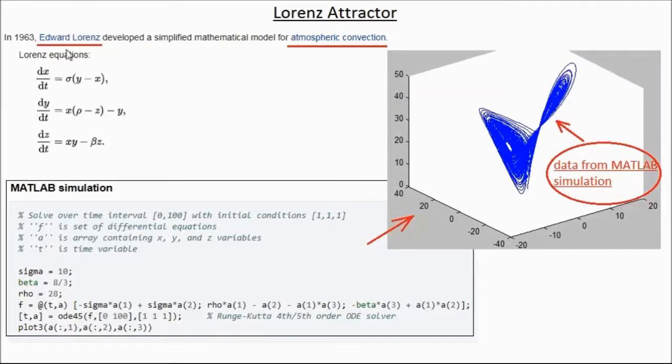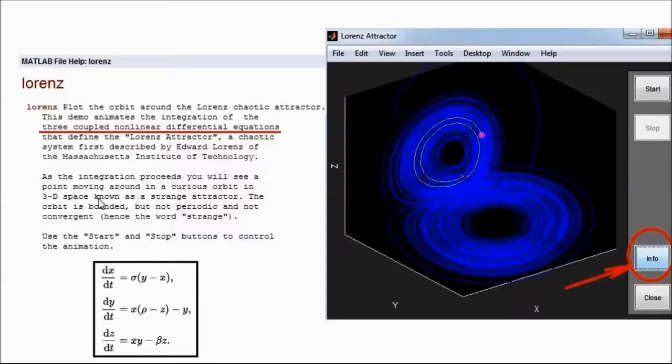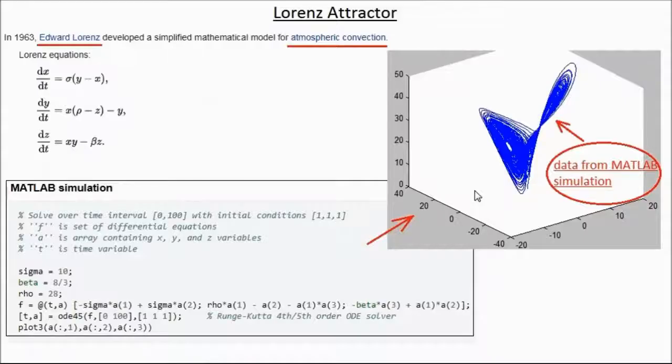Edward Lorenz developed a simplified model of atmospheric convection equations, and these are those equations which we saw in the previous frame as well. It is possible to simulate this in MATLAB. Of course, the demo contains the simulation data which is displayed on the view like this. So MATLAB simulation may be done by running these commands, these lines in MATLAB on the command window, on this window here.